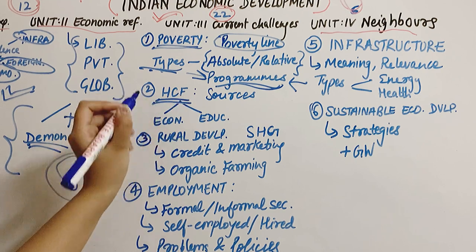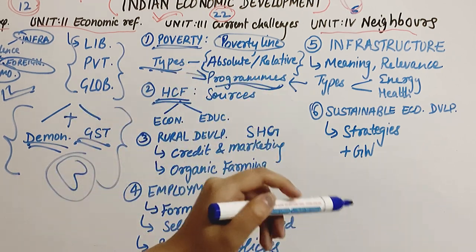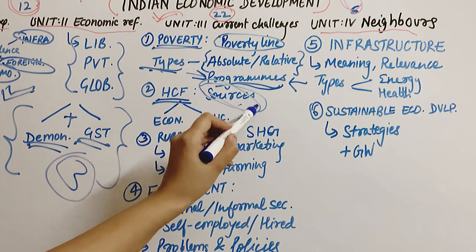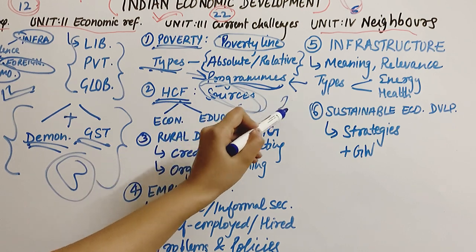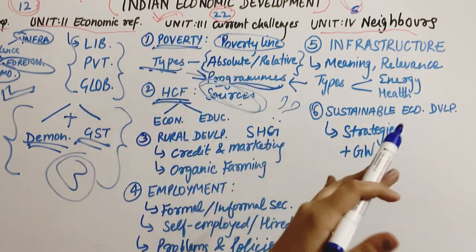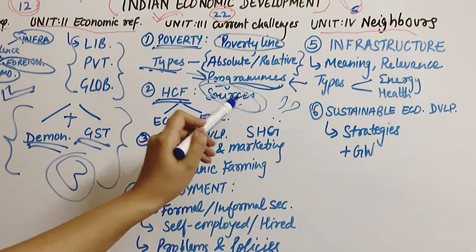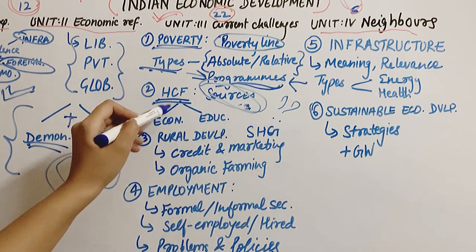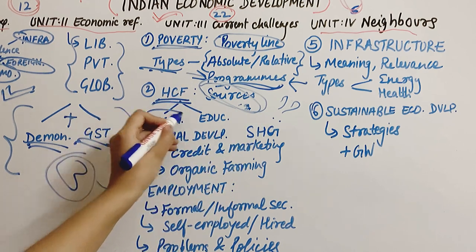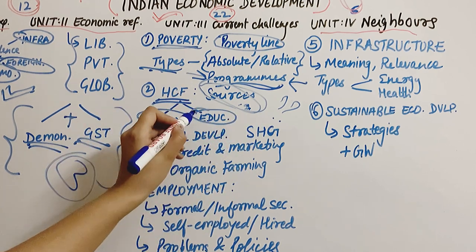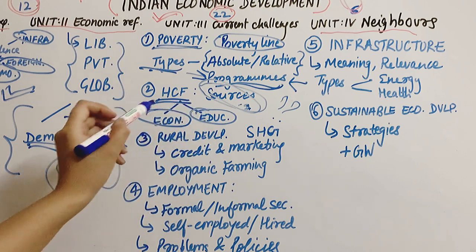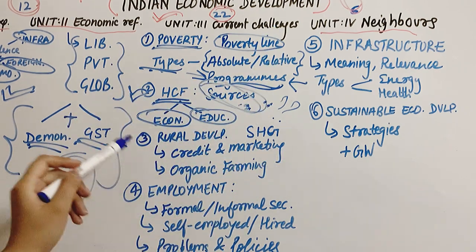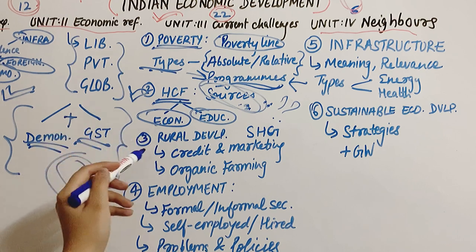The second chapter in Unit 3 is Human Capital Formation. The most important topic here is sources — how human capital formation happens and how resources are transformed. This is in the first and second paragraph of the book. It is divided into two sub-topics: economy and education. Read through the chapter thoroughly, but sources will be what is mostly asked.